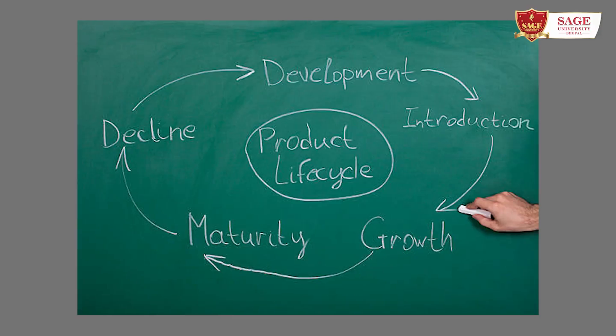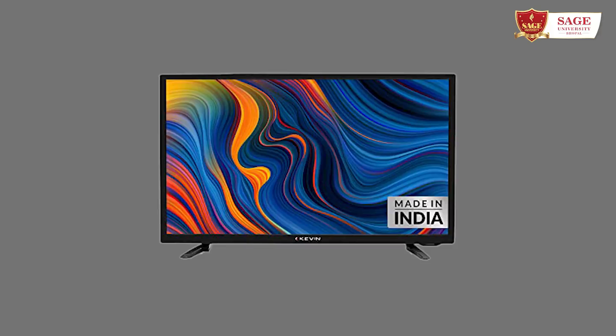It has four stages. The first one is introduction, the second one is growth, the third one is maturity, and the fourth one is decline. When we had black and white TV at home, that is an example of introduction. Then we had color TV — that is an example of growth. Now we have LCD, that is an example of maturity. And what we have now — HD — that is a pre-decline stage of TV.